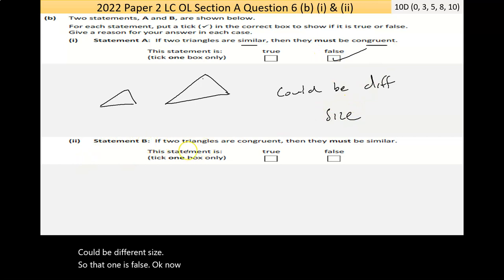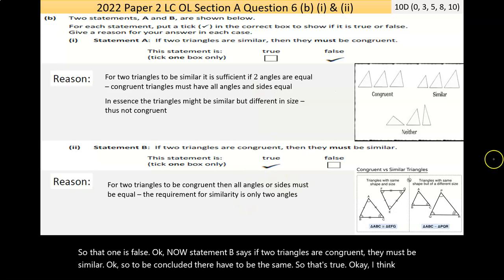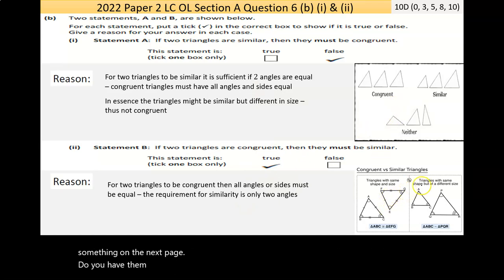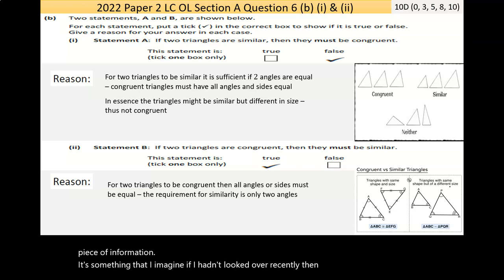Statement B says if two triangles are congruent, they must be similar. To be congruent they have to be the same, so that's true. Congruent triangles have to be the same shape and size, whereas similar triangles have the same shape but could be different sizes.